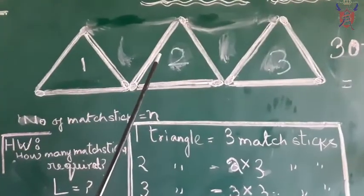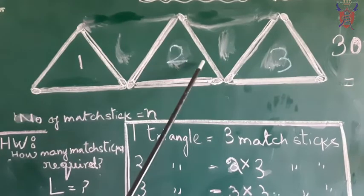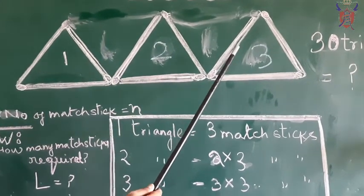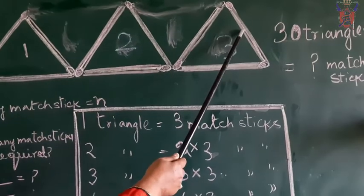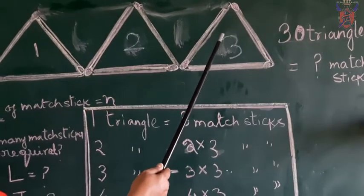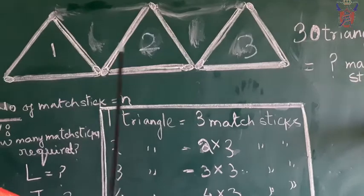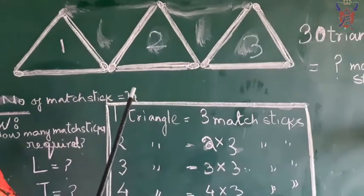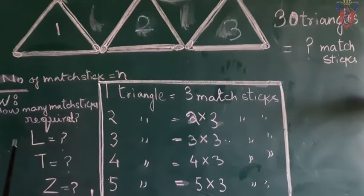Second triangle is again 1, 2, 3. Both together are six matchsticks. Third is again 3, 1, 2, 3 matchsticks. They are three triangles and 1, 2, 3. Three 3's are 9 matchsticks total. You can go on like this up to anything.